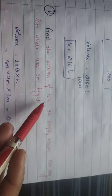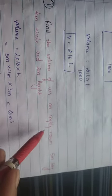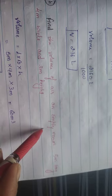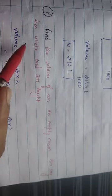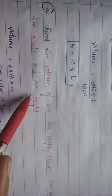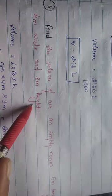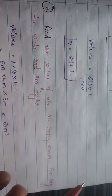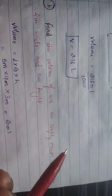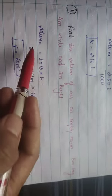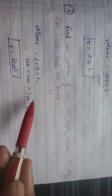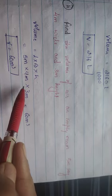Next question: Find the volume of an empty room that is 5 m long, 4 m wide, and 3 m high. Three dimensions are given, so it is a cuboid. Volume = L × B × H = 5 × 4 × 3 = 60 m³.